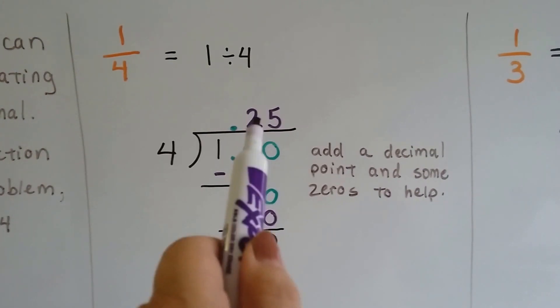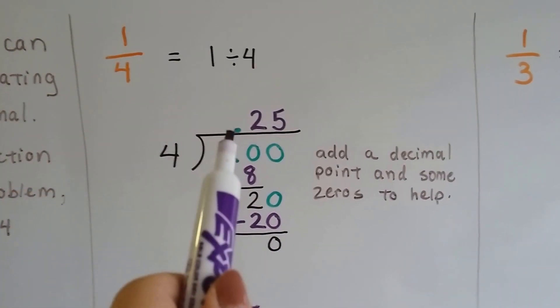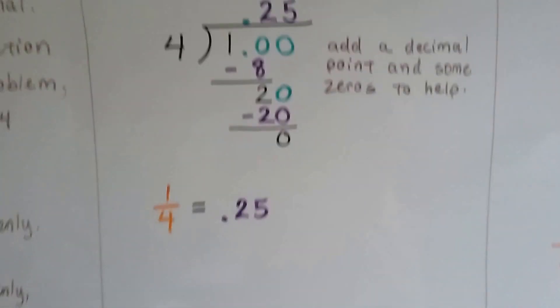We got a 0, so we know we're finished. So 1/4 is equal to 0.25.